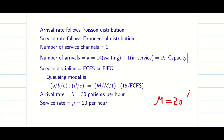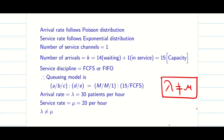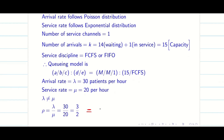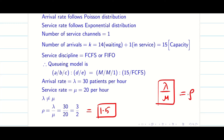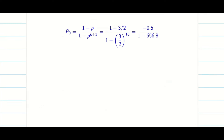The service rate mu is 20 per hour. Importantly, lambda is not equal to mu, so we use rho in the formula. Rho equals lambda divided by mu, which is 30/20 = 1.5. Instead of writing lambda/mu everywhere, I will use rho. You must state this at the start of your solution so evaluators know what rho represents.